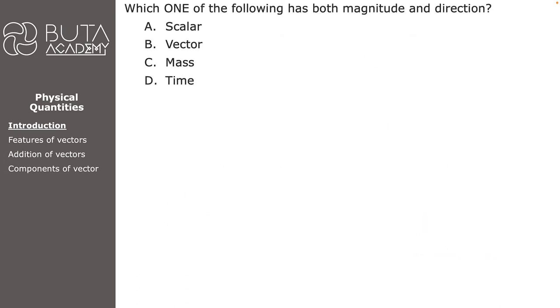Question one: which one of the following has both magnitude and direction? A. Scalar, B. Vector, C. Mass, D. Time. This one must be quite easy to answer as the question is the definition of a vector, so the answer is B.